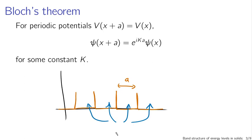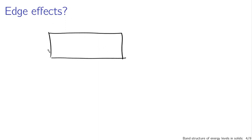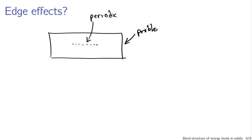One unfortunate consequence of Bloch's theorem is that it only works for completely periodic potentials. For a real chunk of silicon, there are edges — the inside definitely has a periodic potential, but at the edges the periodicity breaks down and Bloch's theorem won't apply. So we need some approximation or plausibility argument for how we can still apply Bloch's theorem. We've already made a lot of simplifying assumptions, so what's one more?